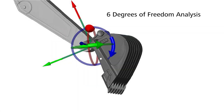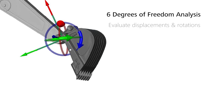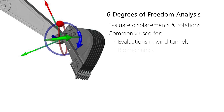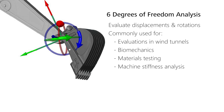Welcome to Zeiss Inspect Correlate. In this video I want to show you how easy it is to perform a six degrees of freedom analysis in Zeiss Inspect Correlate. The 6DOF analysis allows you to evaluate the displacements as well as the rotations of your testing object. It's commonly used for evaluations of parts in wind tunnels, in biomechanics, materials testing, machine stiffness analysis, and crash tests, for example.